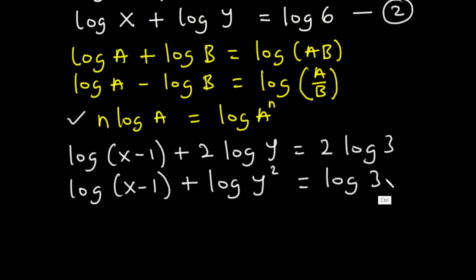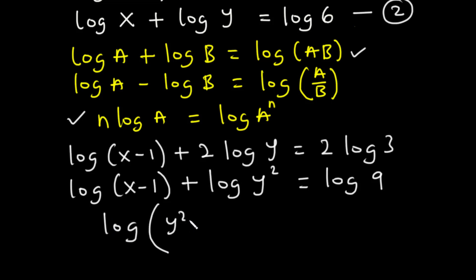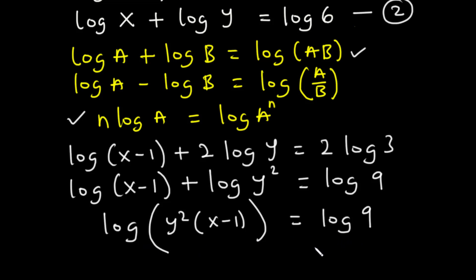So that's log(x minus 1) plus log y squared equals log 3 squared, and 3 squared equals 9, so we have log 9. According to the property log a plus log b equals log ab, we get log of y squared times (x minus 1) equals log 9. Since both sides have log to the same base, we cancel the logs: y squared times (x minus 1) equals 9. Let's call this equation 3.